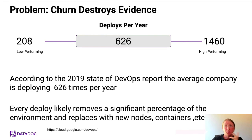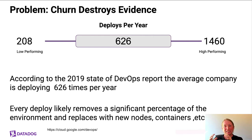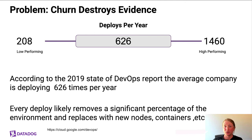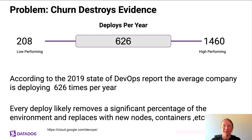This is a problem for forensics because it destroys evidence. When you do a deploy, your containers go away. When you do a deploy, your EC2 instances go away. When your autoscale group expands and contracts, we're throwing away valuable instance data. According to Google's State of DevOps report, the average company deploys 626 times a year — almost twice a day for a medium competency DevOps shop. Considering that the mean time to detect a breach could be weeks or months, you could have already gotten rid of all the evidence needed to figure out exactly how somebody got in and what they got out.